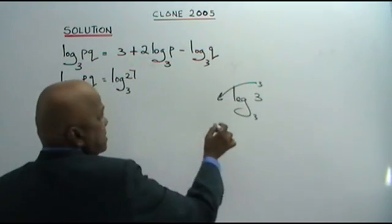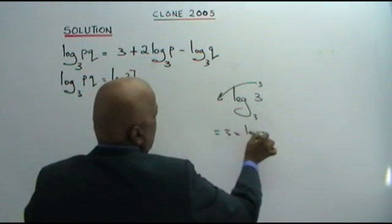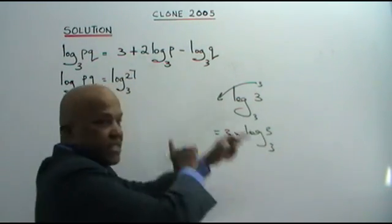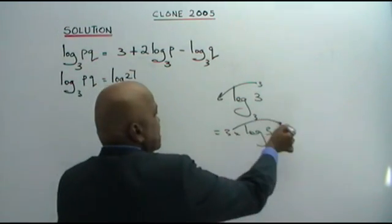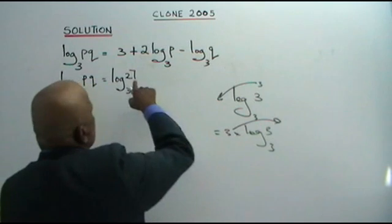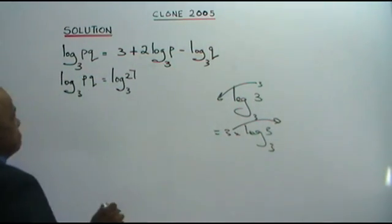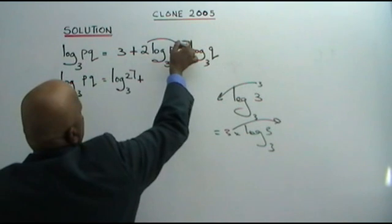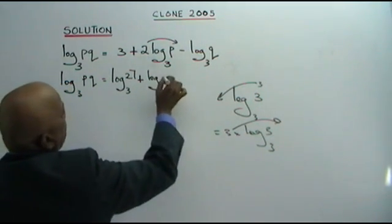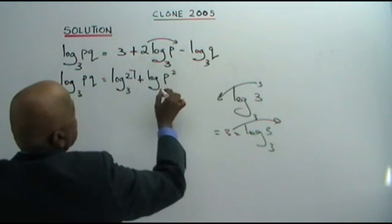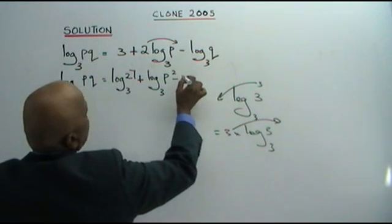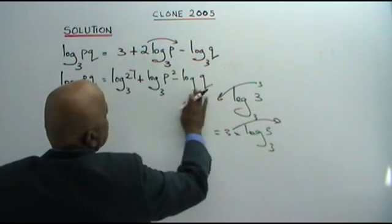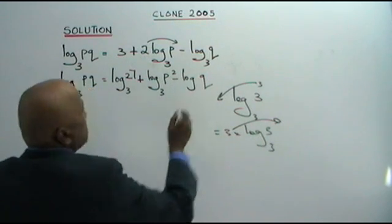If you bring the power forward, it is 3 times log 3, base 3, which equals 1. So in reverse, you bring the 3 up and get 27, i.e., 3 cubed. Plus, bringing this forward: log P squared, base 3, minus log Q.